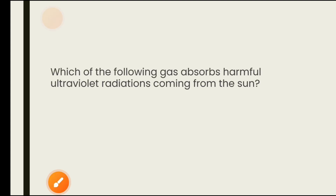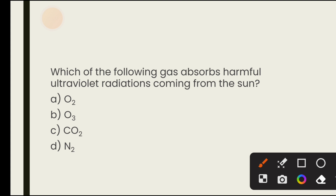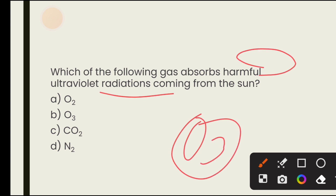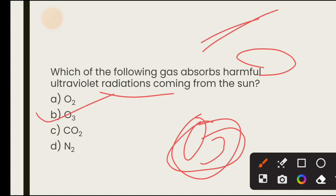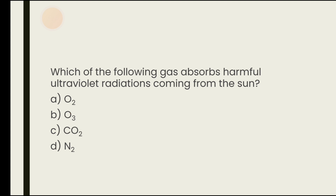Which of the following gas absorbs harmful ultraviolet radiations coming from the sun? This is an important question. The answer is ozone. The ozone layer is found in the atmosphere and it absorbs harmful UV radiations from the sun.